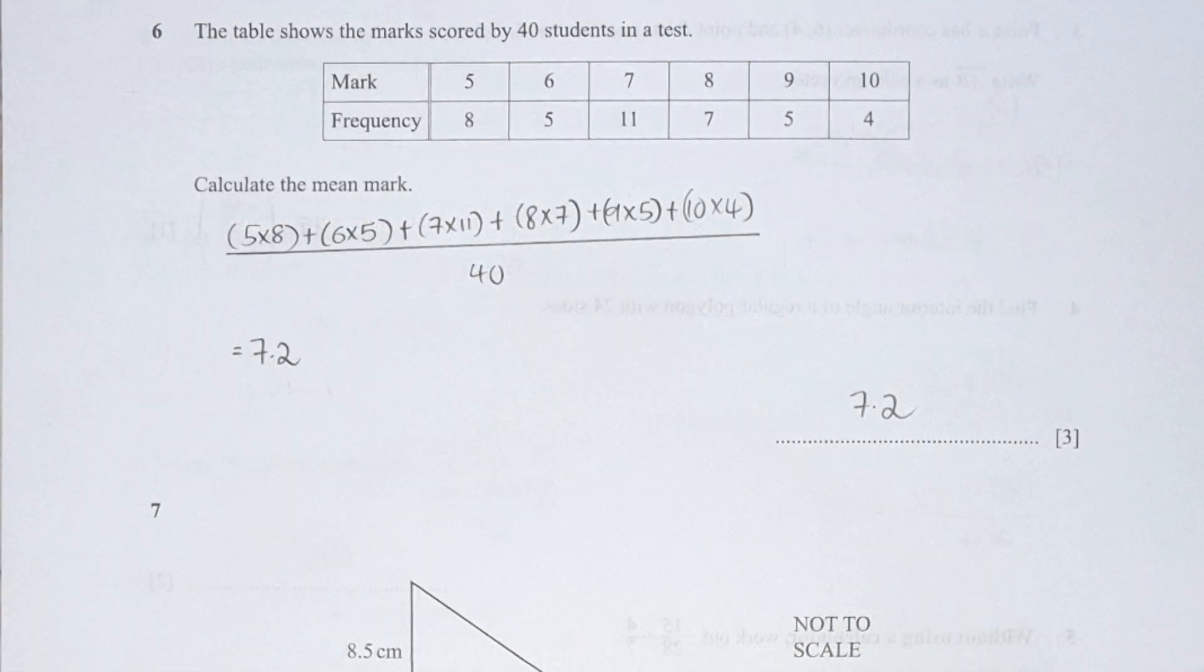For question 6, finding the mean marks, I took the frequency multiplied by its respective marks, then divide it by 40. Through this, you get the mean marks of 7.2.